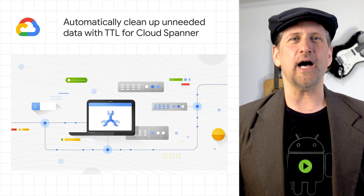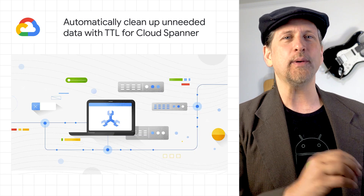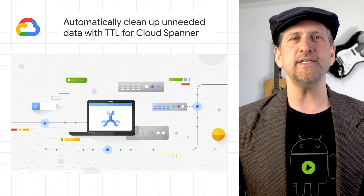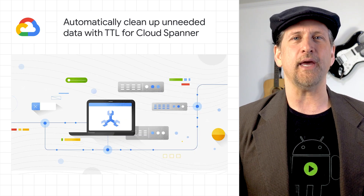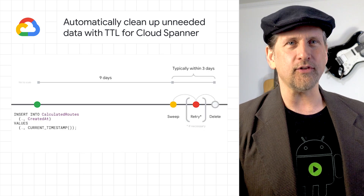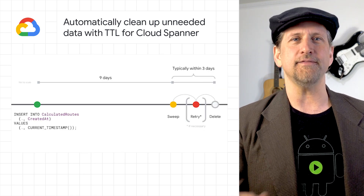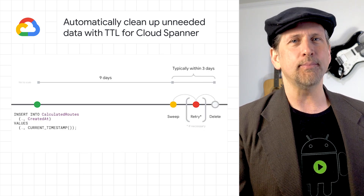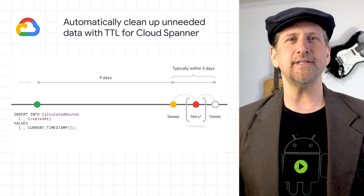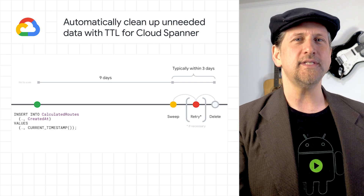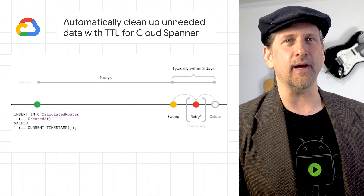Google Cloud announced the general availability of Time to Live, or TTL for Cloud Spanner, allowing database administrators to set policies to periodically delete ephemeral, temporary, or unneeded data from Spanner tables.